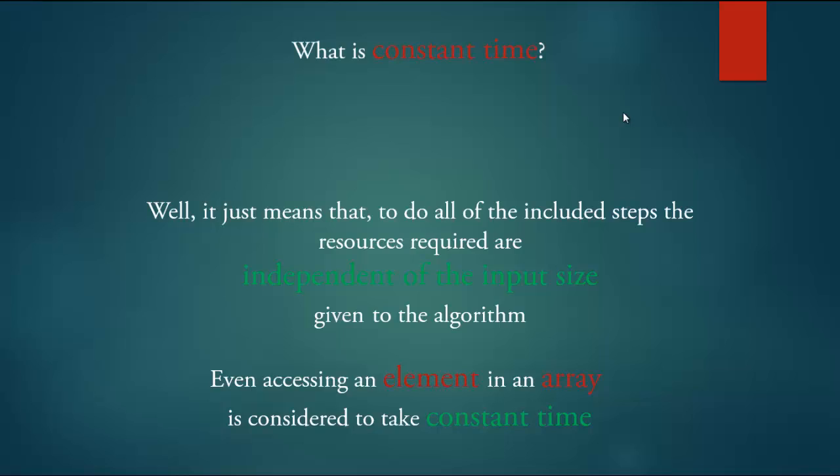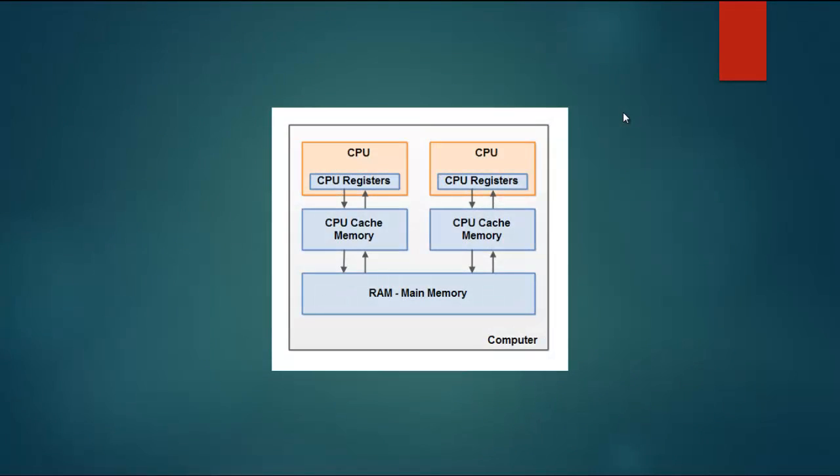Even accessing an element in an array is considered to take constant time. If you know a bit about actual computer architecture, you might know that the time to access a given variable or array element is not necessarily fixed, for it could depend on whether the variable or array element is in the cache, in the main memory or out on disk in a virtual memory system. Some sophisticated models of computers take these issues into account.